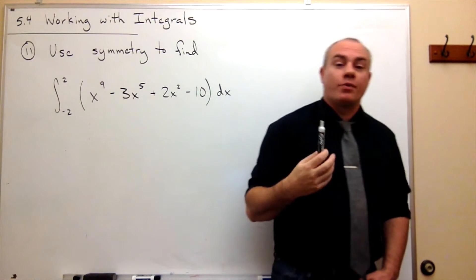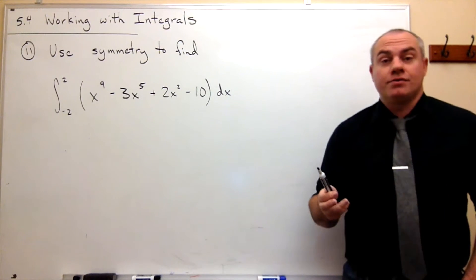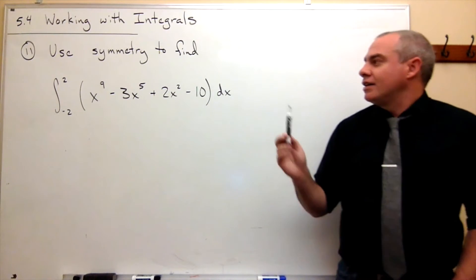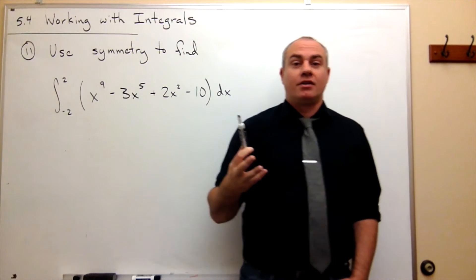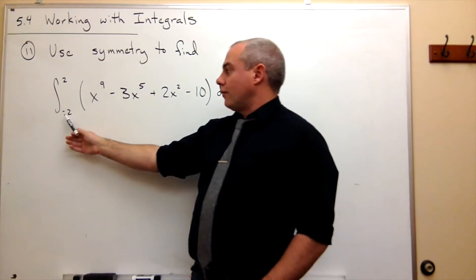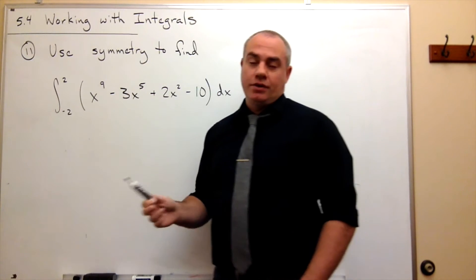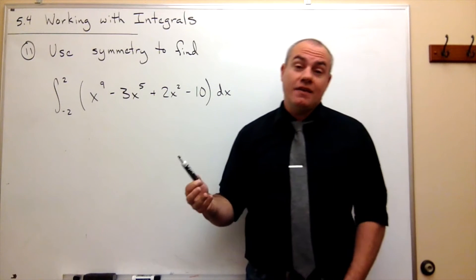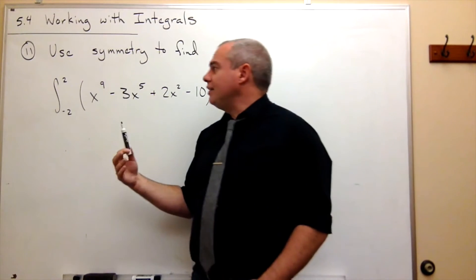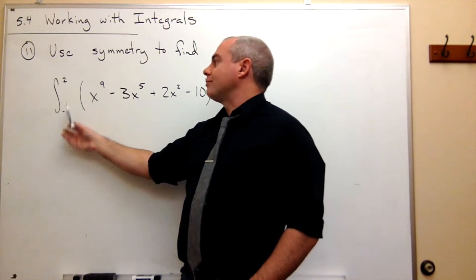The key here is we want to use symmetry to do this problem. What symmetry helps us with is we know if something is an odd function, then if we're taking the integral from negative 2 to 2, then its integral is zero. And if it's an even function, then we could just double the integral from 0 to 2.